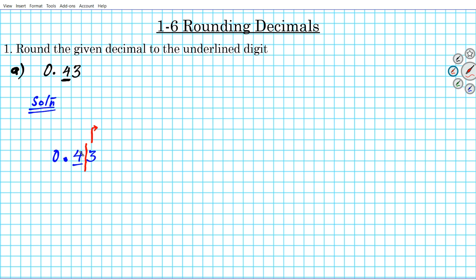If the digit to the right of what you're rounding to is 0 to 4, there's going to be no more — whatever you have to the left, that's what it's going to be, you're not going to round up. But if it's 5 or greater, then you add 1 to the place that you're rounding to. In this case, 3 is from 0 to 4, so no more — we do not round up. All the digits to the right are set to 0. So this becomes 0.40, and since 0 is to the right of the decimal point as the last digit, we do not have to write it. Our final answer is simply 0.4.